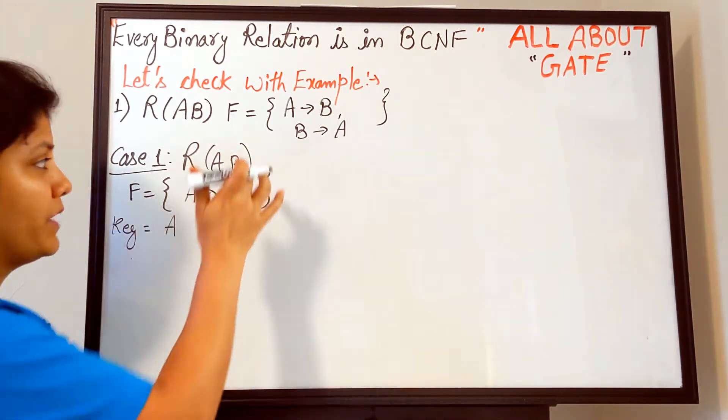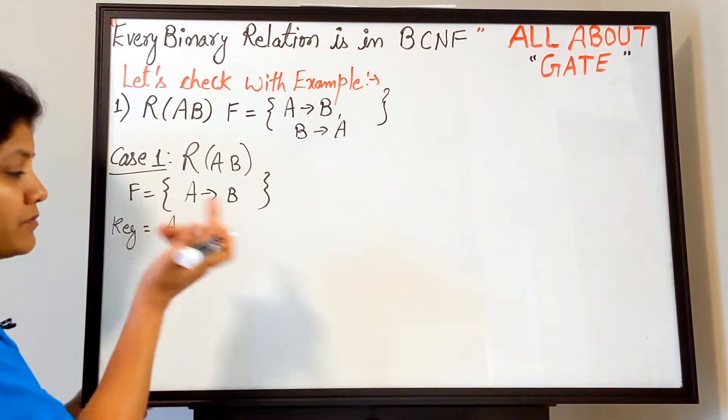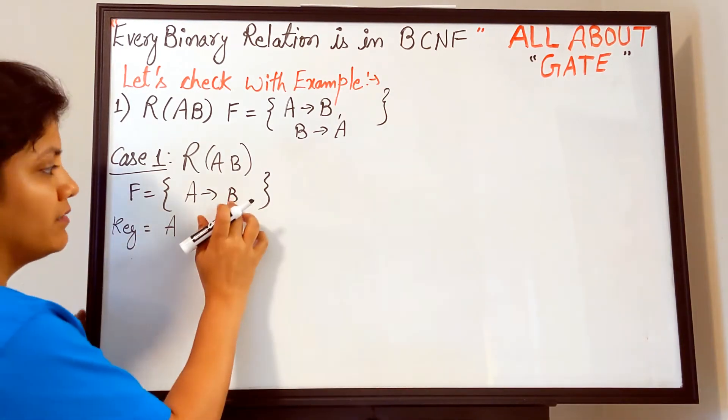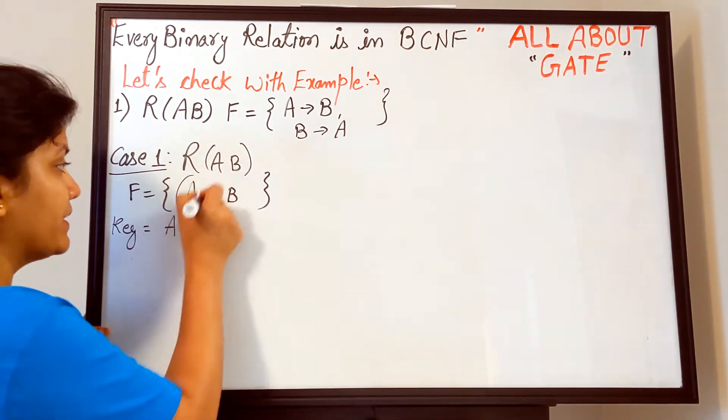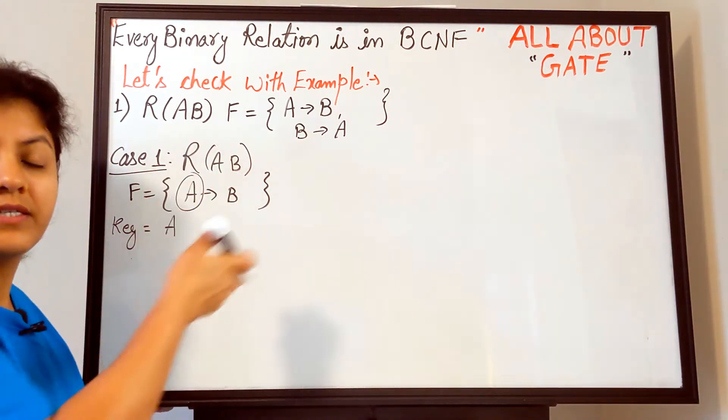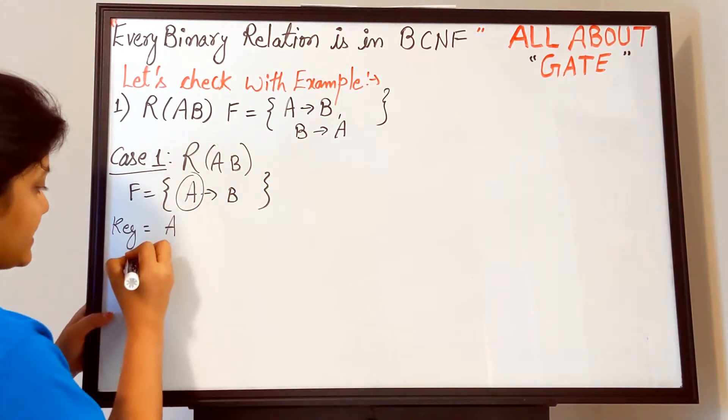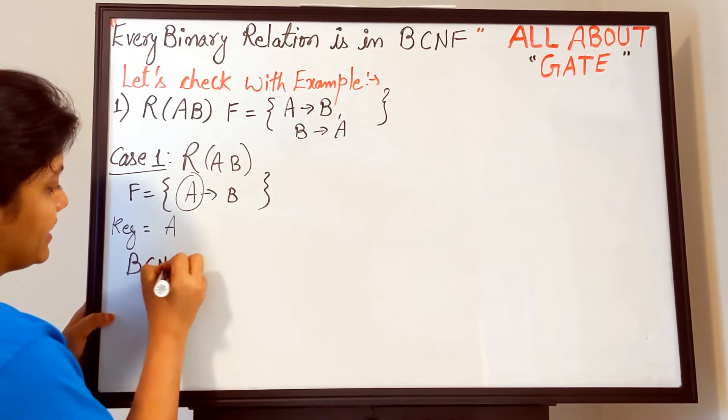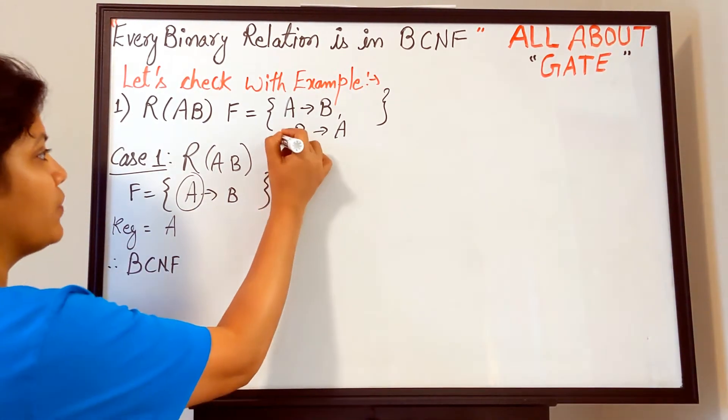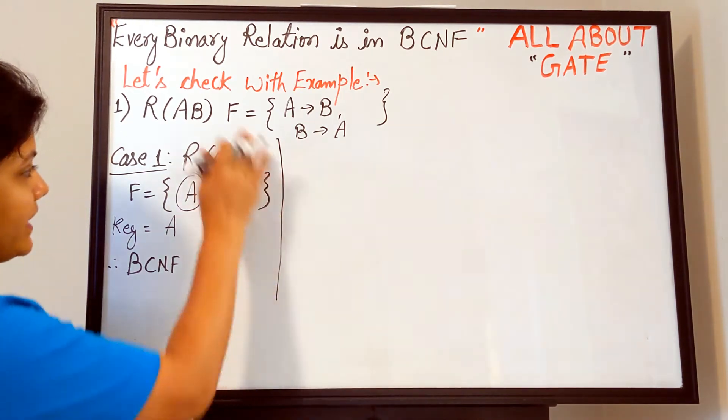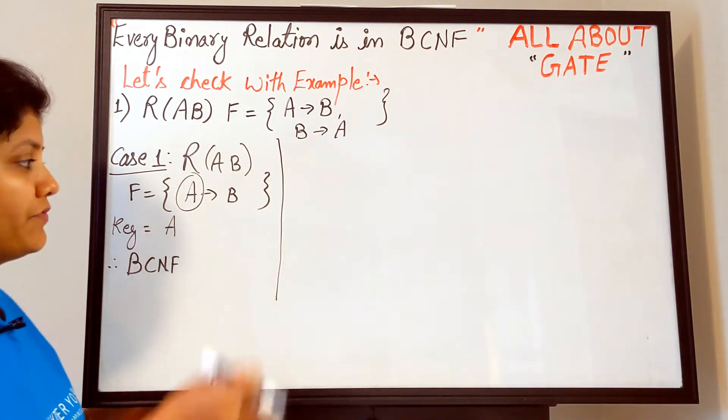If I take A closure, A+ = {A, B}, so my relation is determined and A becomes the key. B is non-key attribute. A is key completely, so determinant is key completely. So what is the type of normal form? Certainly BCNF, no doubt.